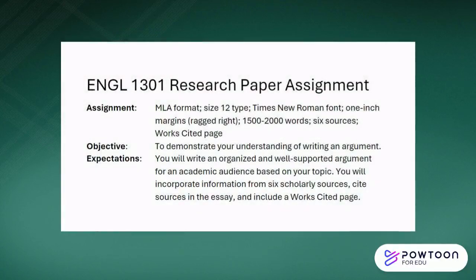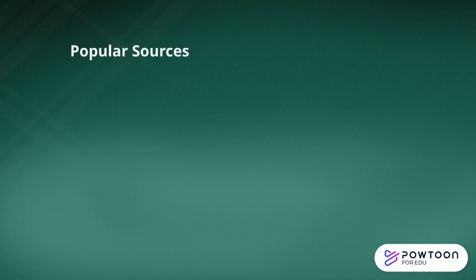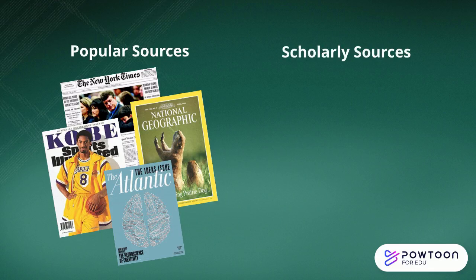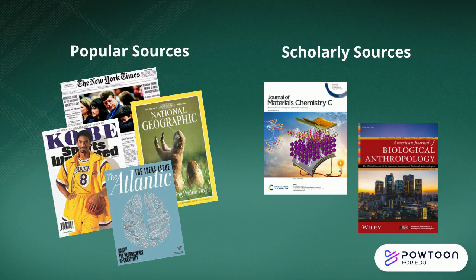In college, your professors may ask you to find scholarly sources for your research papers and projects. So how do you know if an article is scholarly? Scholarly sources are different from popular sources. You're probably more familiar with popular sources like magazines and newspapers. These resources are readily available online or in print, like at a drug store or bookstore, and can be consumed in quick doses. Scholarly sources, on the other hand, are usually found in specialized publications such as scholarly journals and academic books. They often contain very specialized information and are mostly accessible through libraries and online databases because they require subscriptions.